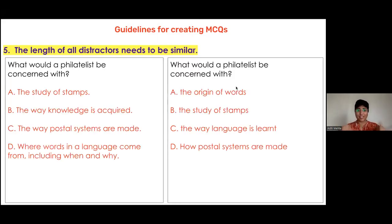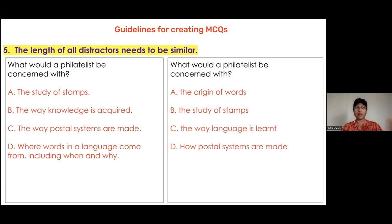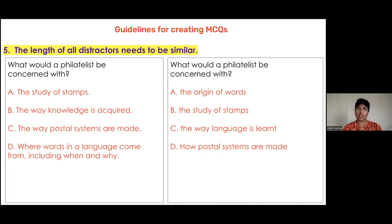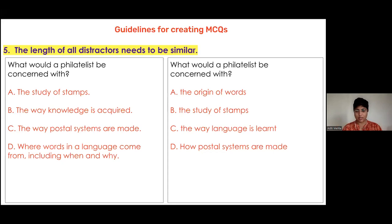Children do have that tendency to respond to the option that looks the longest. As teachers, we may have created a fabulous test item, and the purpose is to check a higher order thinking skill, but the way we create the options does not give the child the possibility to demonstrate higher order thinking. Creating the MCQ is crucial.